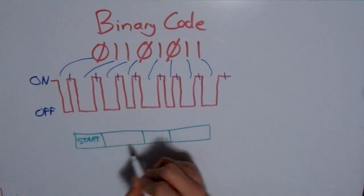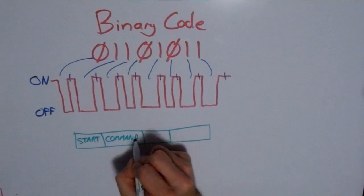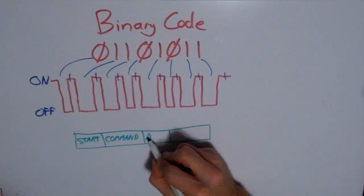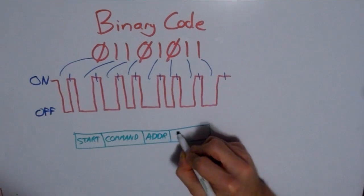This might be a long pulse. Then, it's going to send the command. This might be something like volume up or volume down. Then it'll send an address, and then finally a stop code.